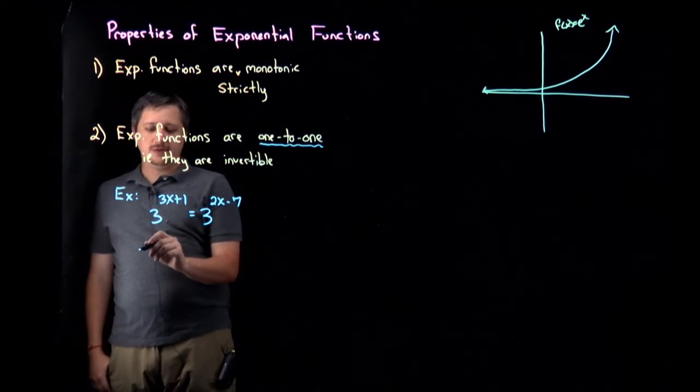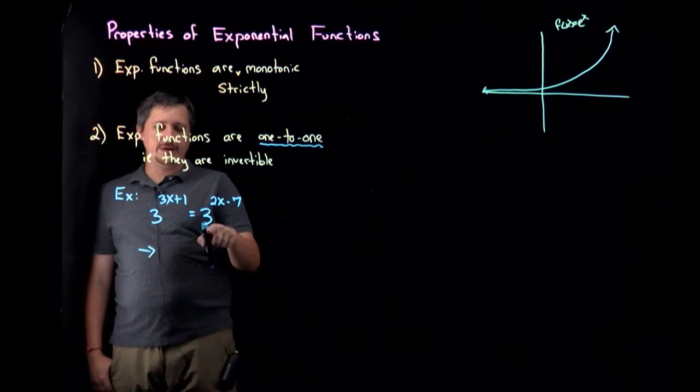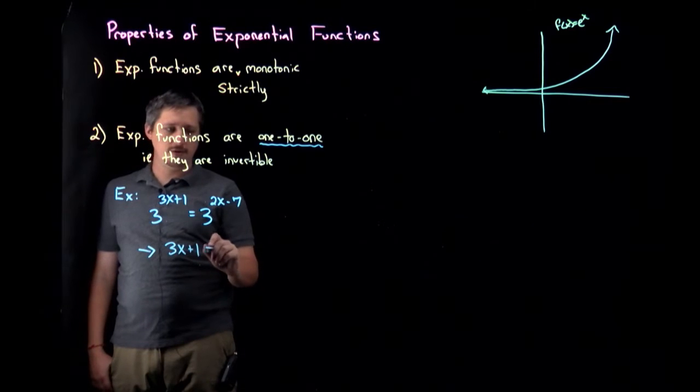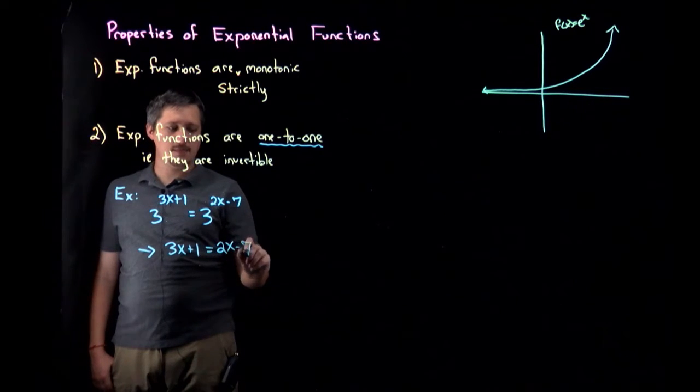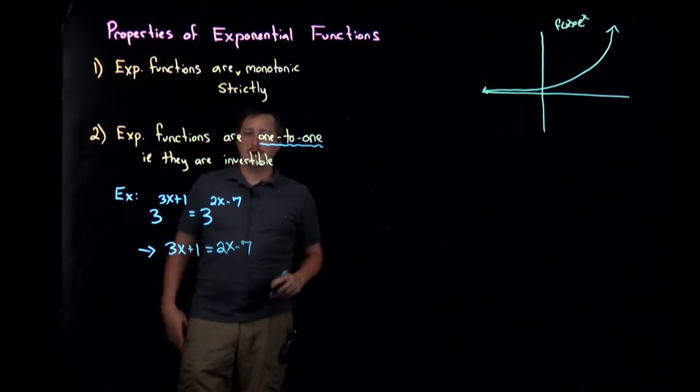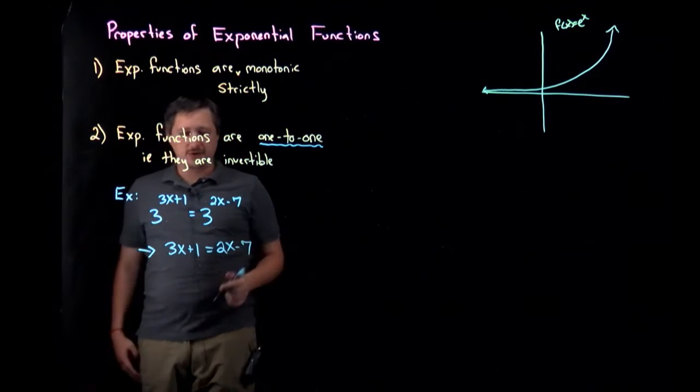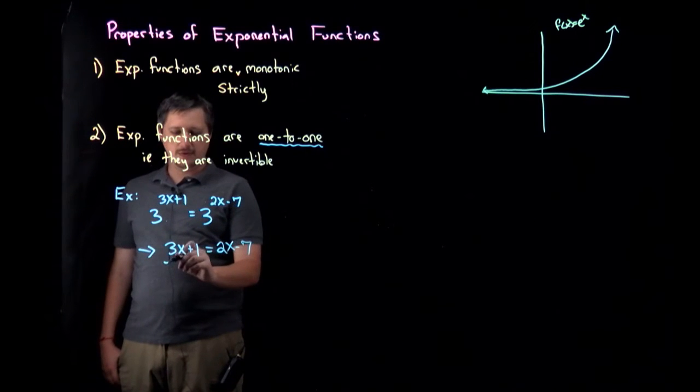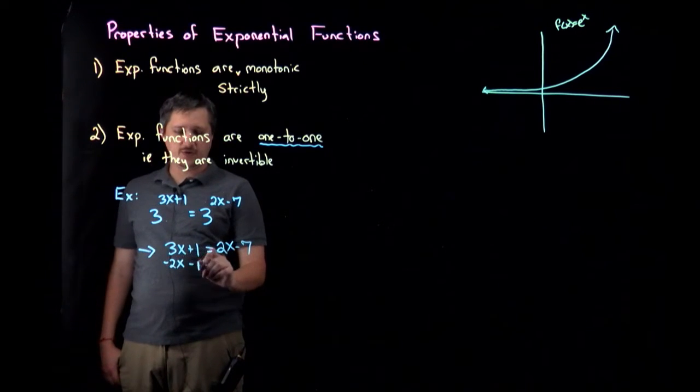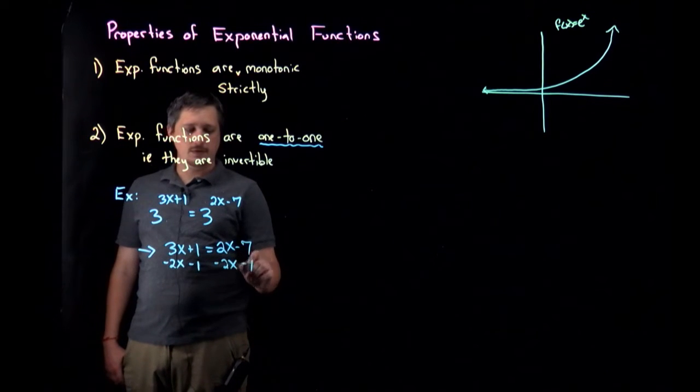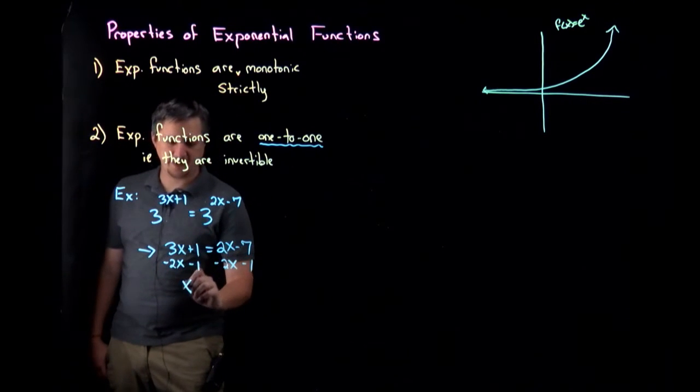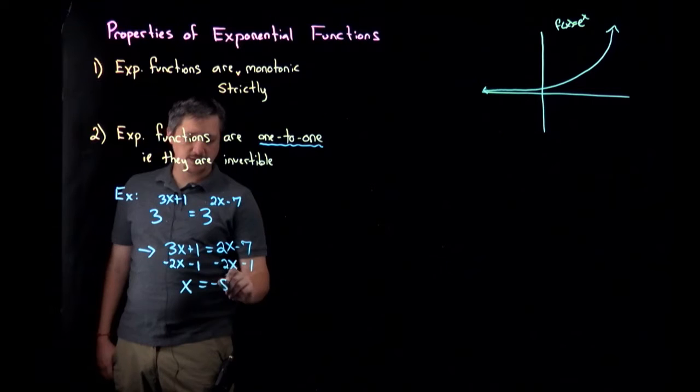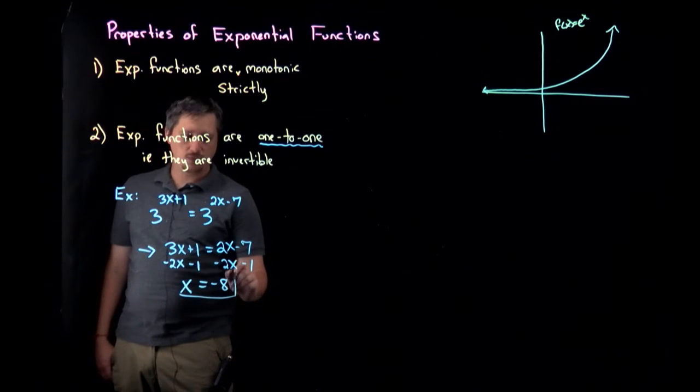This tells me since this is a 3 and that is a 3, their powers have to be equal, so 3x+1 = 2x-7. But now I can solve this - subtract 2x and subtract 1 from both sides. So I'm gonna get x on this side - 3x minus 2x is x - giving me x = -8. And that's my answer.